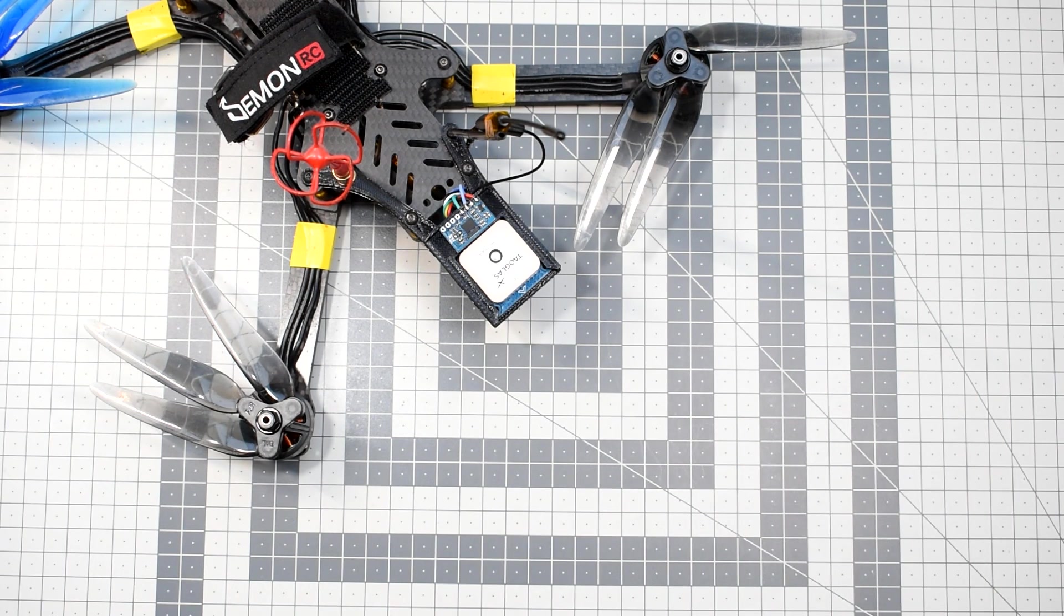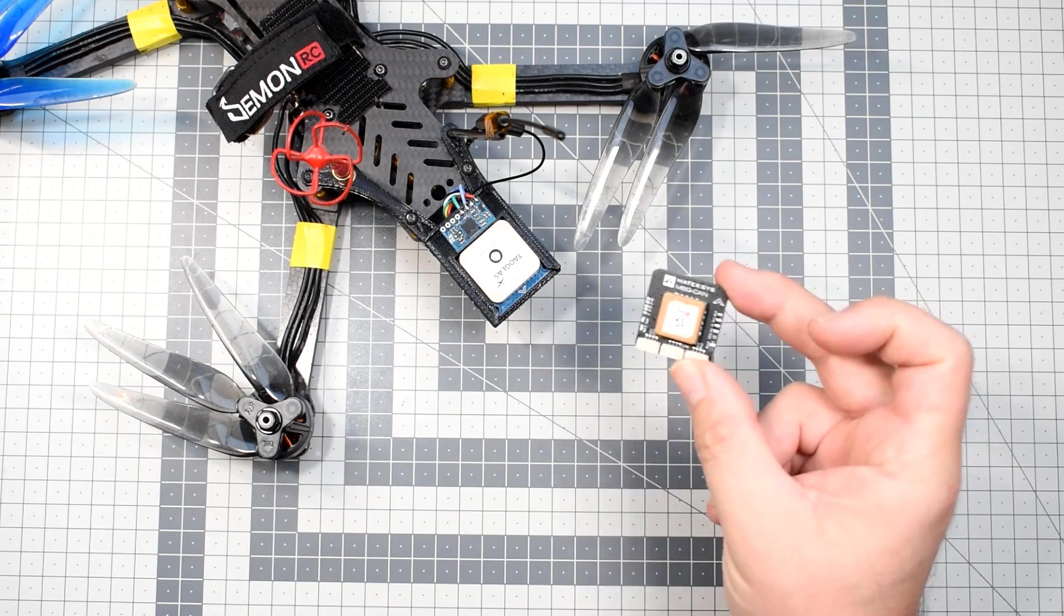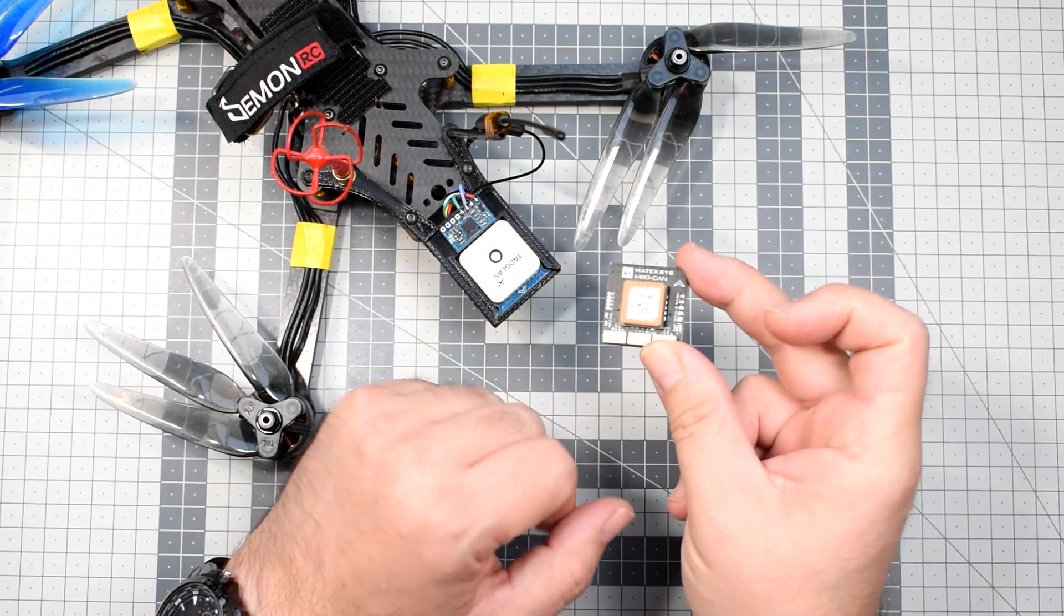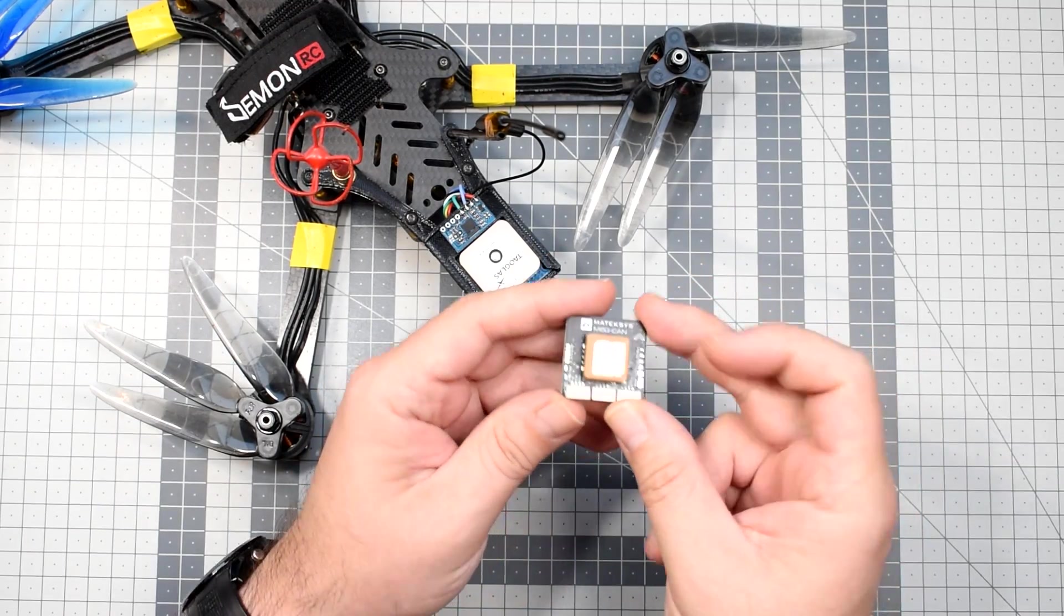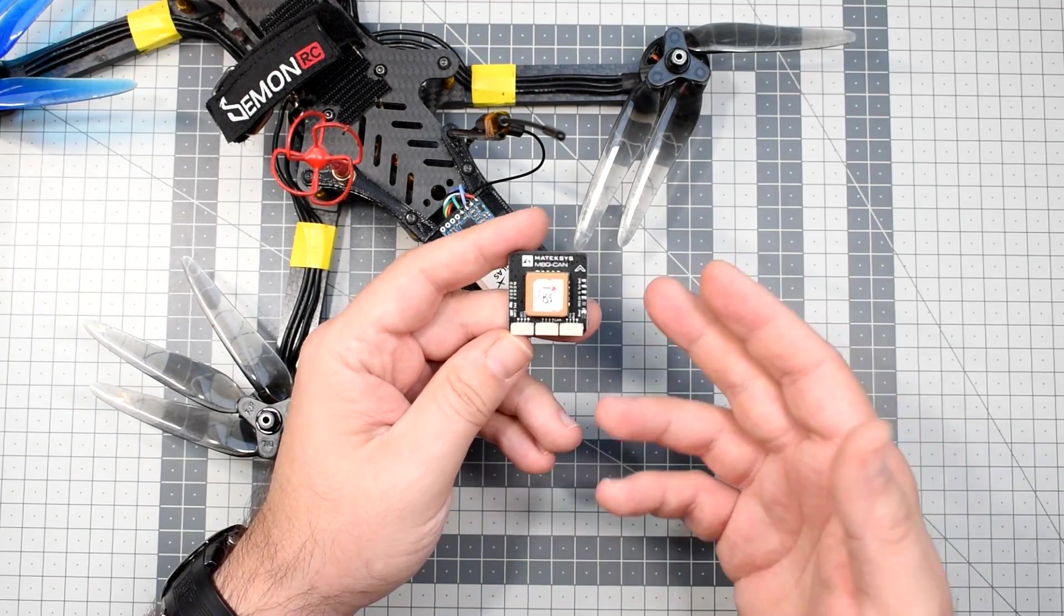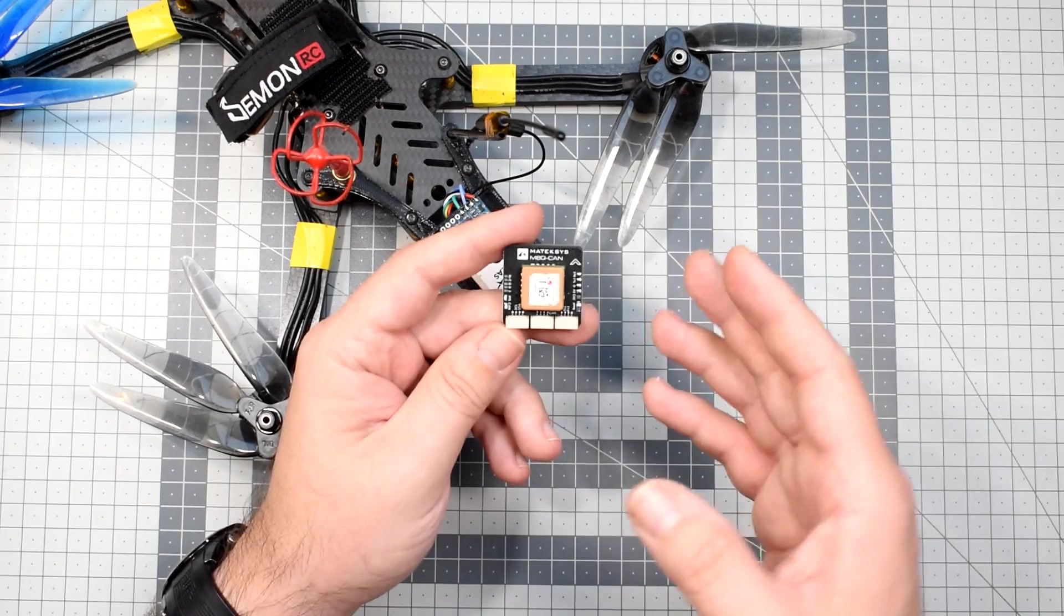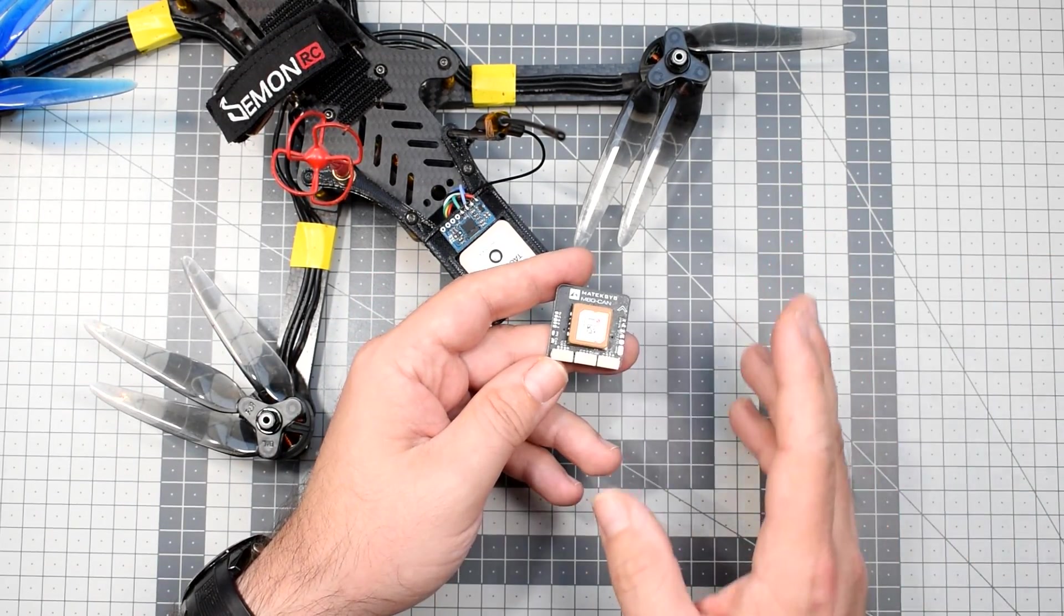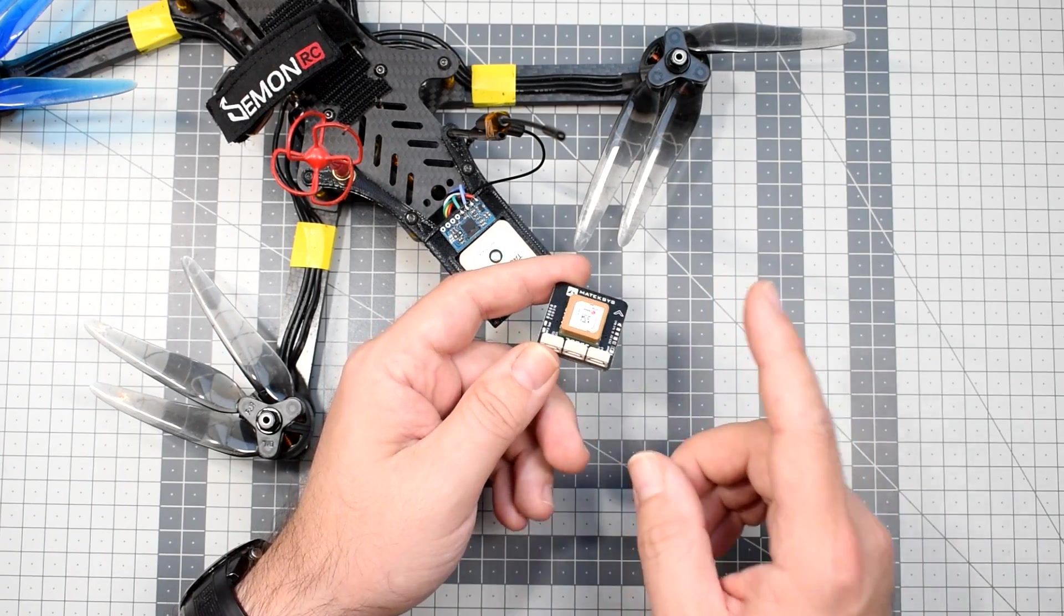Then Mateksys showed something slightly better, which is this board, still the same antenna and still M8 series of the U-blox GPS, but equipped with the CAN bus that allows better connection to ArduPilot and with the proper firmware also to the latest releases with iNav.